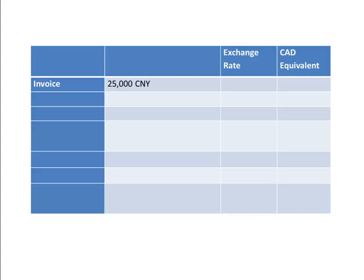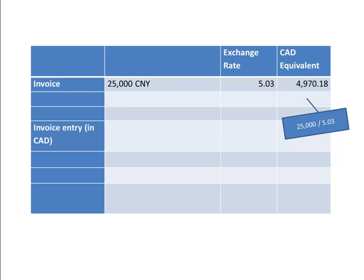At the time you receive the invoice, 1 Canadian dollar is equivalent to 5.03 yuan. This translates to 4,970.18 Canadian dollars. Our entry will be Debit Inventory or Purchases for 4,970.18 and Accounts Payable is credited for the same amount.